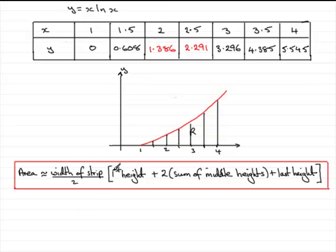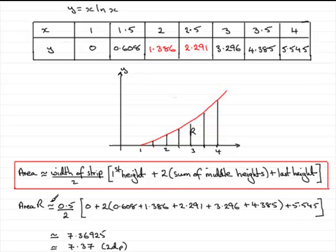Divide the width by 2, then you take the first height — in this example that's 0, the first y value. Then you add 2 times the sum of all the middle heights — simply add together all the middle y values from 0.608 to 4.385 — and then add the last height. I've done that calculation for you and you should be able to follow it through. You've got to give it to two decimal places, so it turns out to be 7.37.